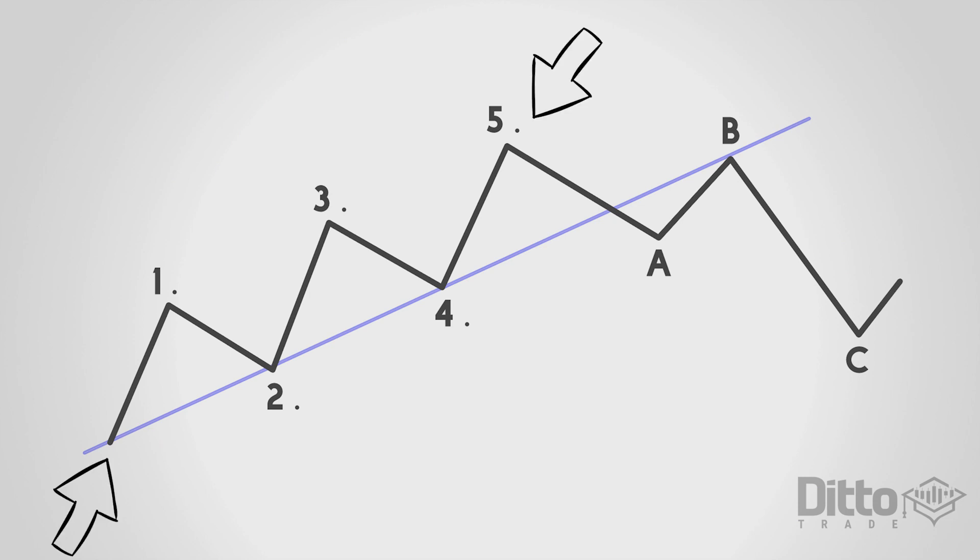In this example we have an impulse wave. It travels in the same direction as the larger trend and there are always five waves within the pattern.